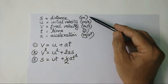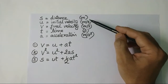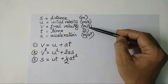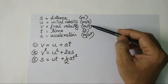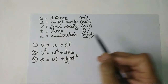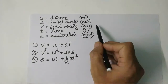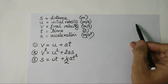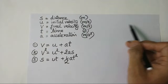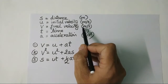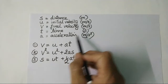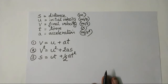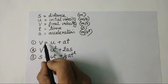Most people understand initial and final — it means from one place to another. For example, if your speed was 30 km/h at the start and then became 60 km/h, then 30 is the initial velocity and 60 is the final velocity. Time is in seconds and acceleration is in meters per second squared.